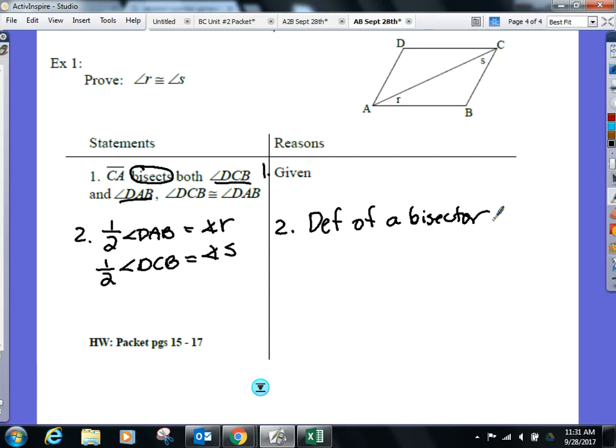You ready? Cameron, what do you know about angles DAB and DCB? They're equal. They're equal. Right? Everyone agree they're equal. First word here. Halves of... Do I have equal quantities here? Are equal. So what can I say about angle R and angle S now? They are equal. So angle R is equal to angle S or congruent to.